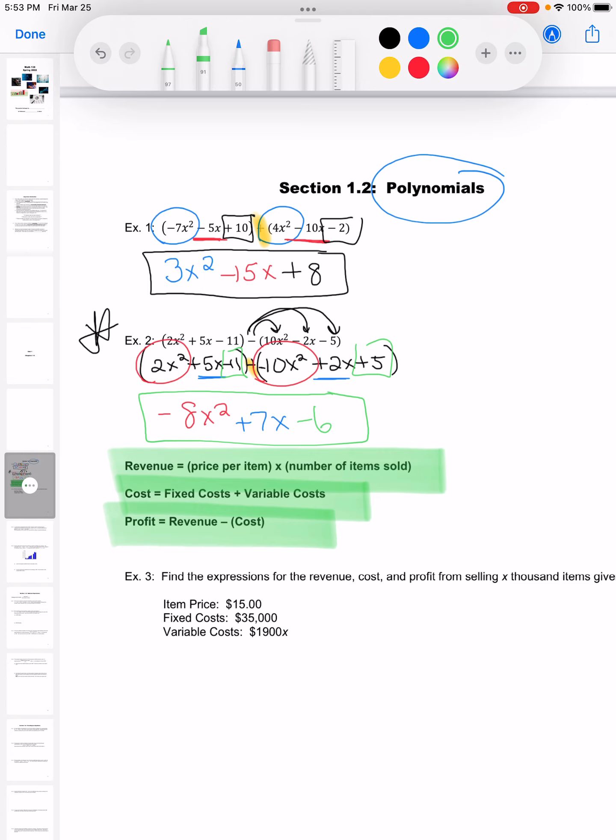So revenue, cost, and profit. We've got the definitions up there and I'm going to work it with an example down below. So in this example, we need to find all three. We're supposed to find the revenue, cost, and profit.